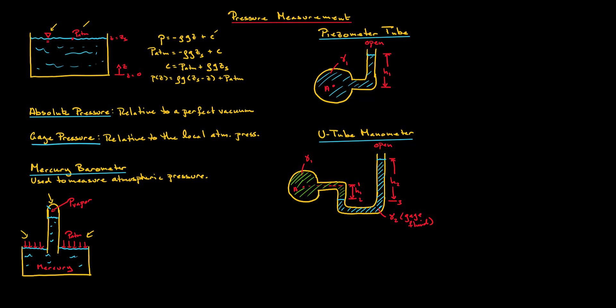There is vapor at the closed end of the tube. To satisfy equilibrium, the weight of mercury in the tube plus the vapor force must balance the force due to atmospheric pressure. That is, atmospheric pressure equals the specific weight of mercury multiplied by the height, plus the vapor pressure P_vapor. Typically, the vapor pressure contribution is negligibly small and can be ignored. Since mercury is the most commonly used barometer fluid, atmospheric pressure is conventionally reported in millimeters or inches of mercury — that is, the height of fluid in the tube.